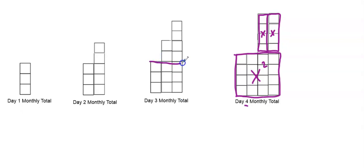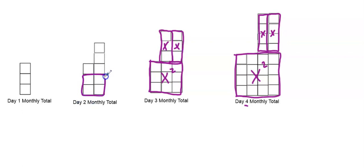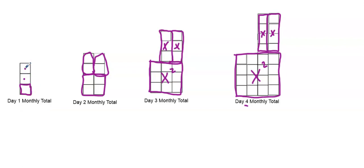Let's see if this works for day three. I have a square with length and width of three — that's x². Then I can make two rectangles that each have x blocks. For day two, a square that's 2×2, and then rearrange the other blocks into two groups of x. Same thing for day one: a block that is x² plus two other x's. That means my explicit equation can be written as f(x) = x² + 2x.